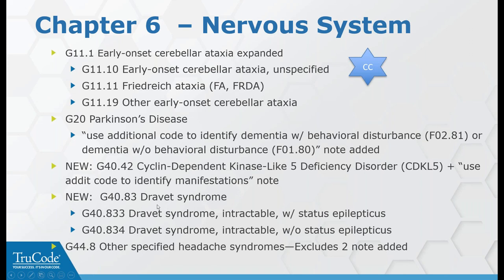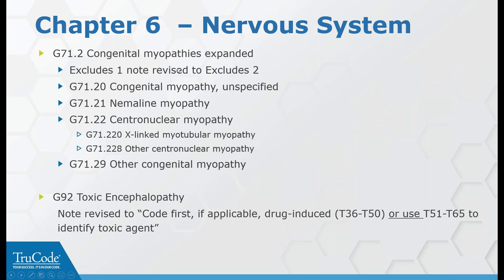Dravet syndrome has additional codes with breakdown for with and without status epilepticus. Previously known as severe myoclonic epilepsy in infancy (SMEI), it is a genetic encephalopathy presenting in the first year of life, representing about 7% of all severe epilepsies presenting before age three. An excludes two note was added under a headache code. Congenital myopathies have a new breakdown — the excludes note was changed to excludes two — with codes for congenital, nemaline, centronuclear, and further breakdowns.